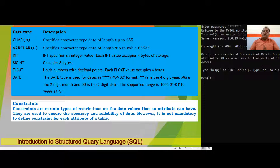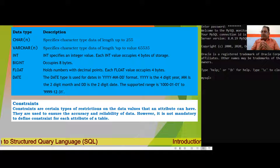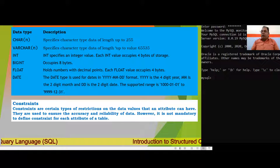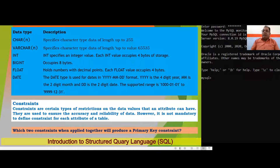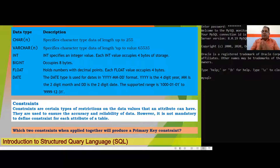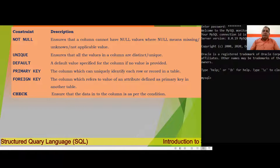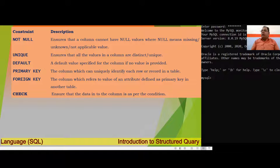After data types, we have constraints. Constraints are certain types of restrictions on the data values that an attribute can have; they are used to ensure the accuracy and reliability of data. It is not mandatory to define constraints for each attribute. We have basically six types of constraints: NOT NULL, UNIQUE, DEFAULT, PRIMARY KEY, FOREIGN KEY, and CHECK.